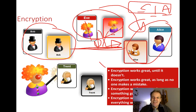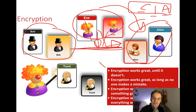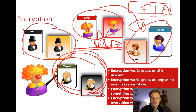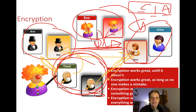The thing with encryption is it might be fairly strong but there can be weaknesses. Encryption works well until it doesn't — it's great as long as no one makes a mistake and everything works correctly. You might have the most perfect encryption scheme but if there's a flaw it can compromise the whole system. We'll introduce the concept of Trent, who is trusted by both Bob and Alice to prove their identities. Later we'll look at PKI — public key infrastructure — where Trent can prove Bob and Alice's identities.